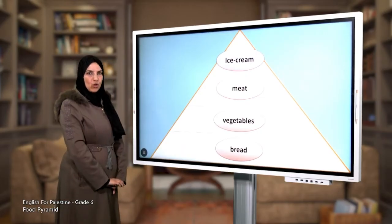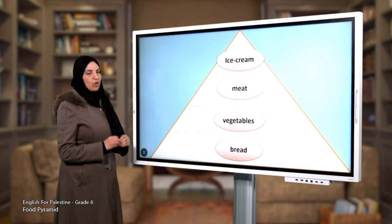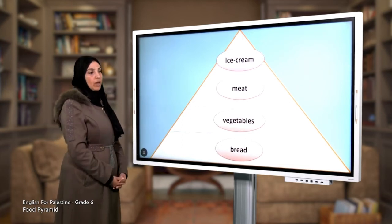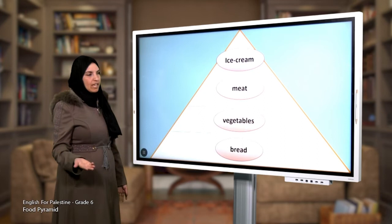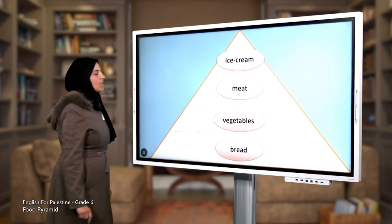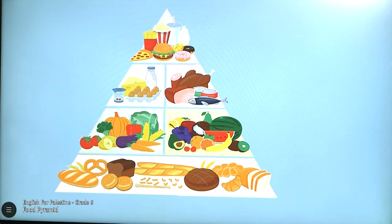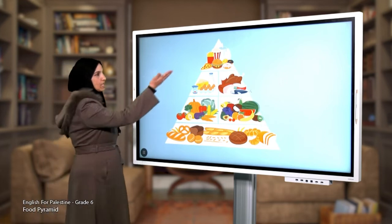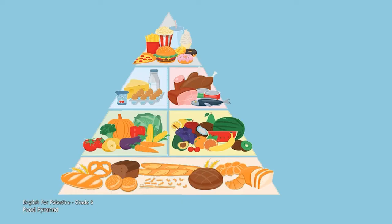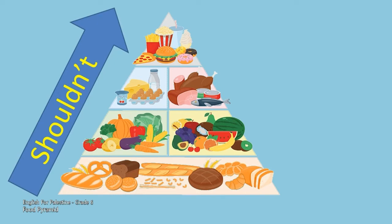Now we are going to know where the food that we should eat is and where the food we shouldn't eat is. Look at this pyramid — the top of the food pyramid and the bottom. What can you see in the top? Healthy food? No, they are unhealthy food, so we shouldn't eat the food at the top.